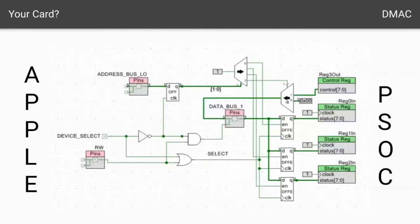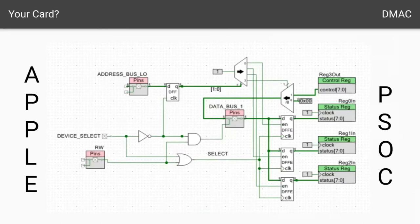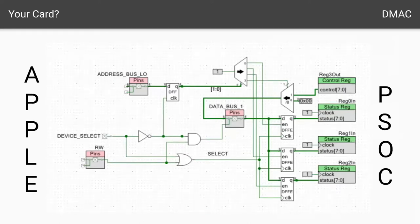This is a screenshot from PSOC Creator — the development tool that comes with the Cypress development kit. I'm not a shill for Cypress, but I've become enamored with this kit because it's fairly easy to use. This is meant to show how easy it is to create something that allows you to interface to your Apple and to the ARM CPU on the PSOC. This simple circuit would give you a three-register input, one-register output configuration that would allow you to talk from Apple to PSOC, and you could get started with your own project.